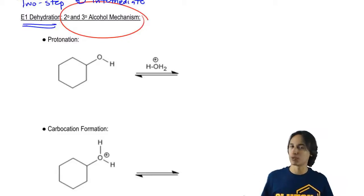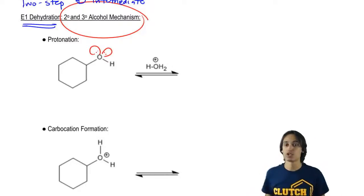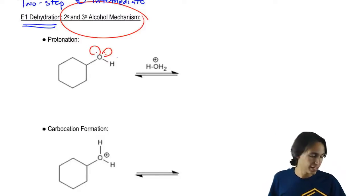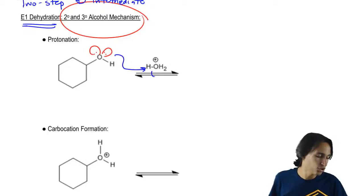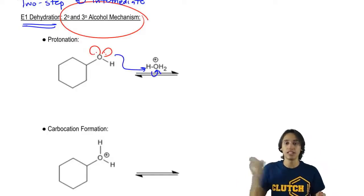So do you see anything that I could protonate easily? Yes you do. There is an alcohol that has very nucleophilic lone pairs. So I can take those lone pairs, one of them, and I can go ahead and use it to make a new bond to that very electrophilic H or very acidic H.